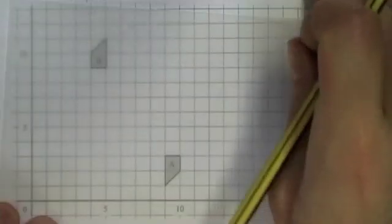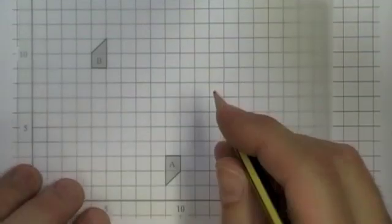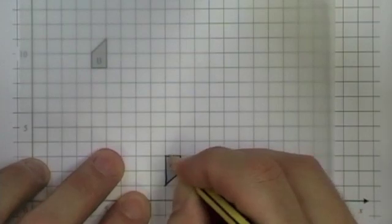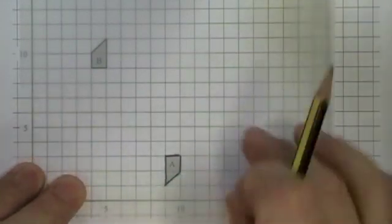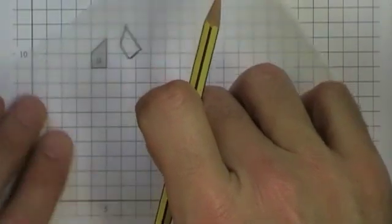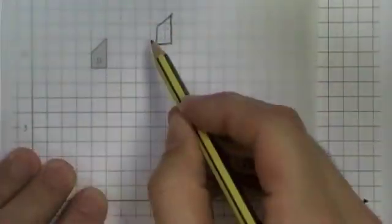And it's quite obvious to see that if I rotate through 180 degrees, I'm going to get the orientation of shape B.